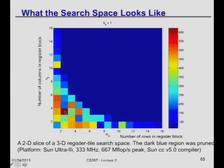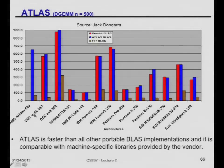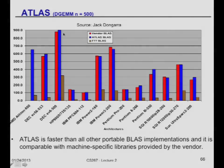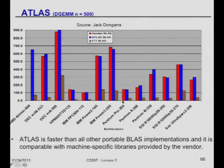Here are auto-tuning results across many machines. The horizontal axis shows many different platforms; the vertical axis is megaflops. For each machine I show three speeds: the vendor BLAS (hand-tuned, in red), ATLAS (the auto-tuner, in blue), and naïve three-nested-loops (brown). In all cases you don't want to use the three-nested loops — that's quite slow. The auto-tuned ATLAS code is almost always about as fast and sometimes even faster than what came from the vendor for a 500×500 matrix multiply. This demonstrates that auto-tuning is a useful thing to do.